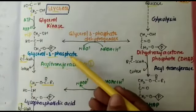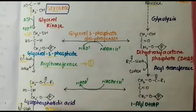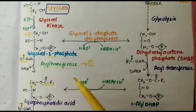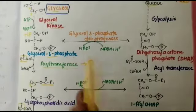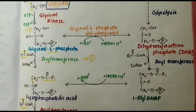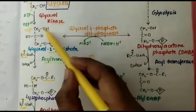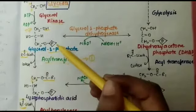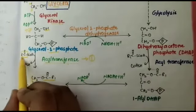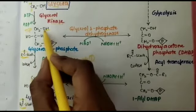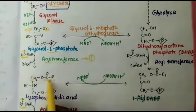The glycerol-3-phosphate will then convert into lysophosphatidic acid by the acyltransferase enzyme. The acyl group occupies one of the OH groups of glycerol-3-phosphate, getting attached there.